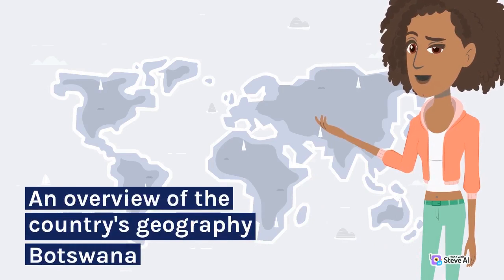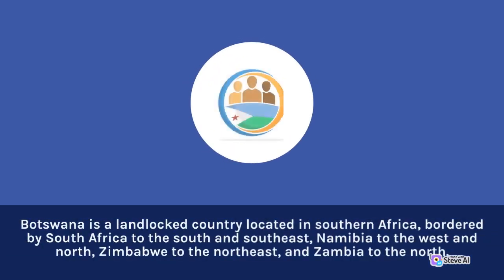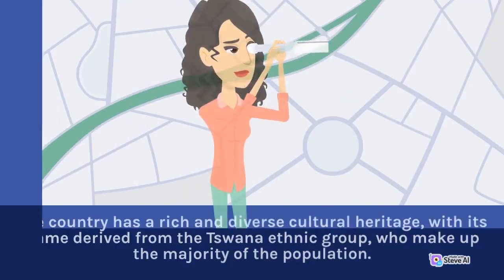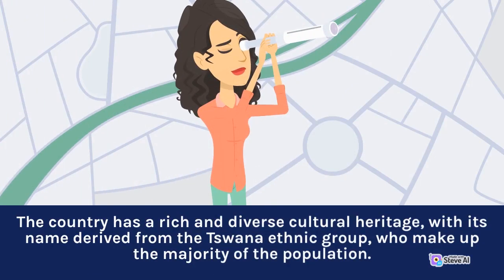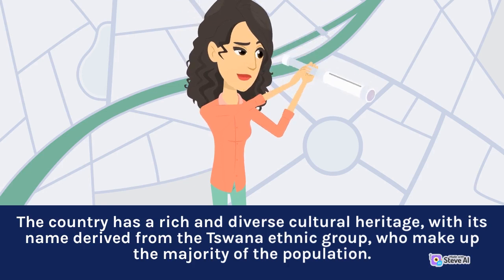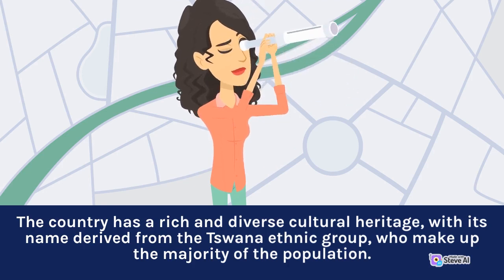Botswana is a landlocked country located in southern Africa, bordered by South Africa to the south and southeast, Namibia to the west and north, Zimbabwe to the northeast, and Zambia to the north. The country has a rich and diverse cultural heritage, with its name derived from the Tswana ethnic group, who make up the majority of the population.